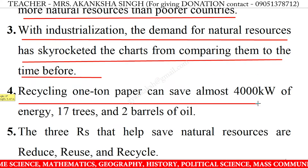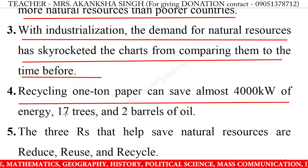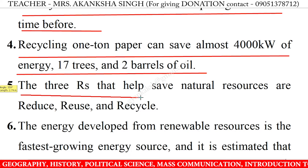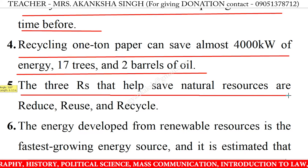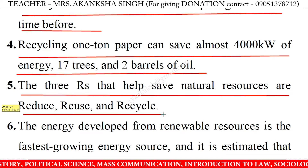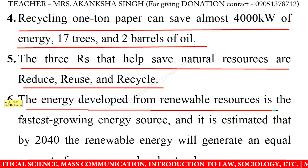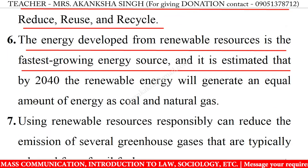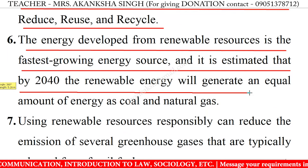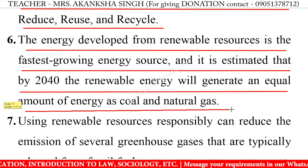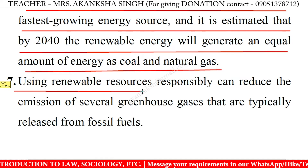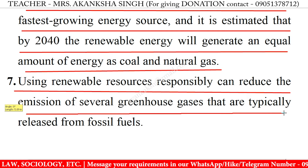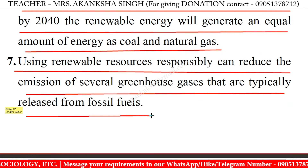Recycling one can of paper can save almost 4,000 kilowatts of energy, 17 trees, and 2 barrels of oil. The 3 R's that help save natural resources are reduce, reuse, and recycle. Energy from renewable resources is the fastest growing energy source, and it is estimated that by 2040 renewable energy will generate an equal amount of energy as coal and natural gas. Using renewable resources responsibly can reduce the emission of several greenhouse gases typically released from fossil fuels.